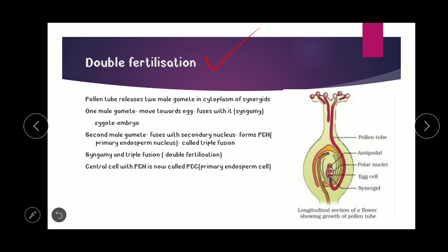Now, double fertilization: this means two types of fertilization are involved. The pollen tube releases two male gametes into the cytoplasm of the synergid. One male gamete moves towards the egg and fuses with it — this is called syngamy. The second male gamete fuses with the secondary nucleus of the central cell (which is n+n), forming the primary endosperm nucleus (PEN) — this process is called triple fusion, because three nuclei fuse. Syngamy and triple fusion together are collectively called double fertilization, a phenomenon unique to angiosperms. The central cell with PEN is now called the primary endosperm cell (PEC), which provides nourishment to the developing embryo.